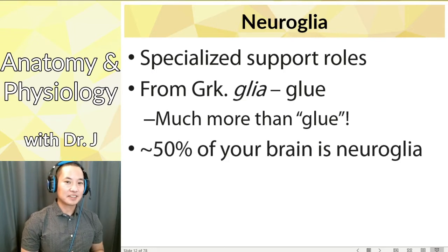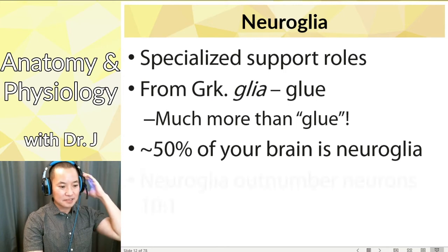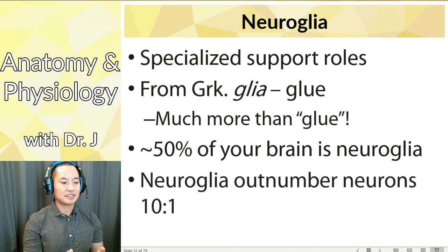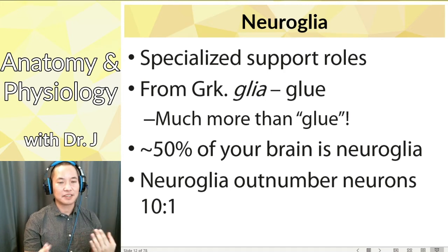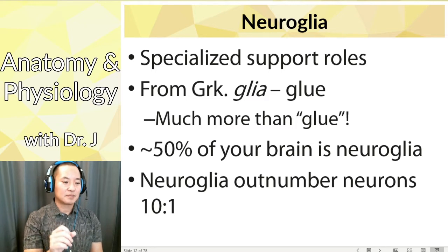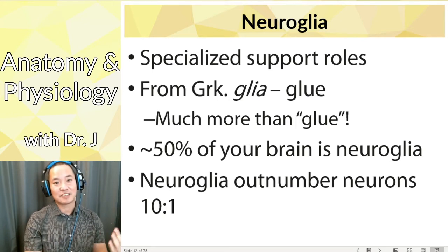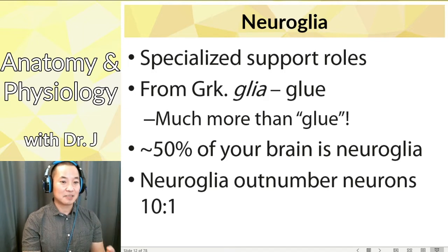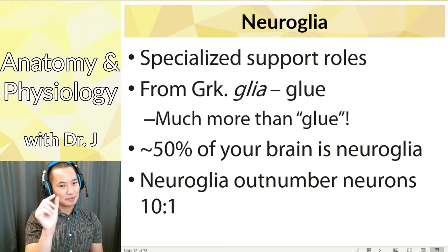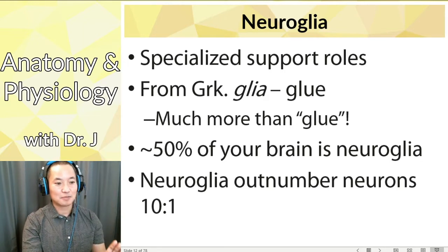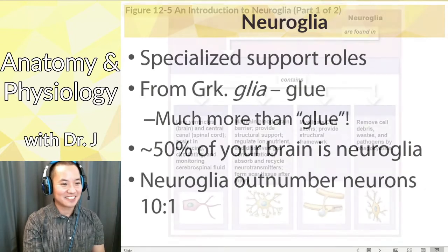50% of your brain is neuroglia, and it's not just glue — it actually has important roles. Neuroglia outnumber neurons 10 to 1, yet they're only 50% of brain volume because they're very small compared to neurons. It's similar to the bacteria in your body: they outnumber our cells, but they're so tiny that we're not just wandering masses of bacteria.